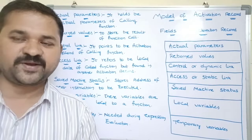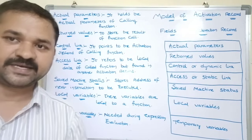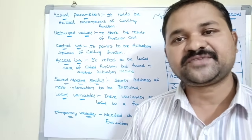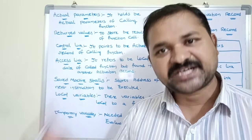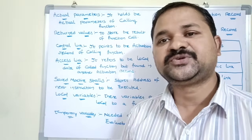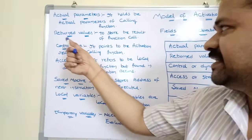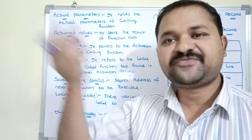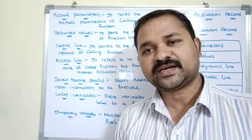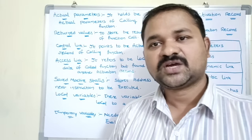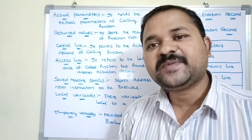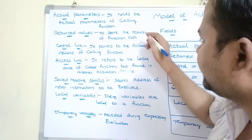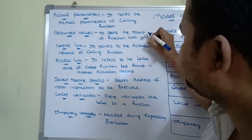Actual parameters are the parameters declared inside the calling function; they are passed to the formal arguments of the called function. Return values are used to store the result of a function call. For example, in 'a = sum()', the sum function returns an integer value, which is stored in 'a'.